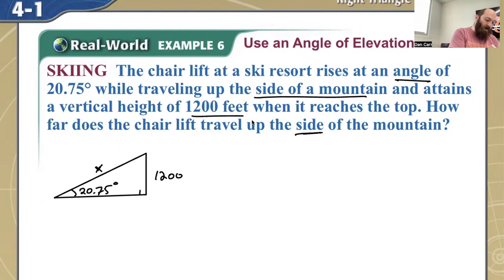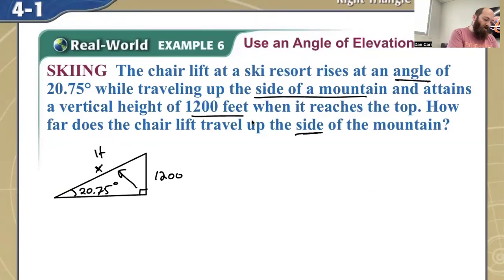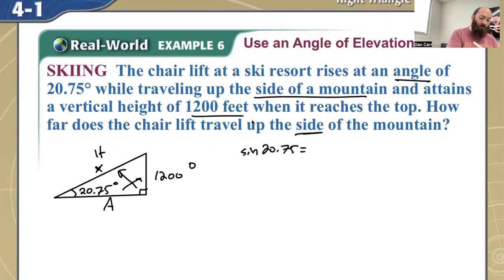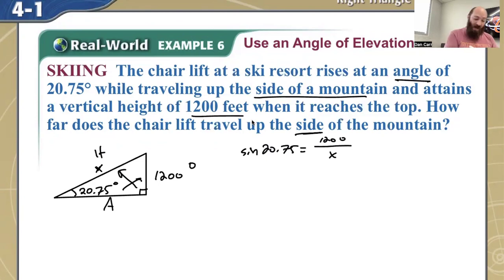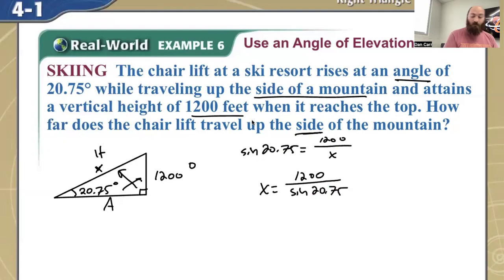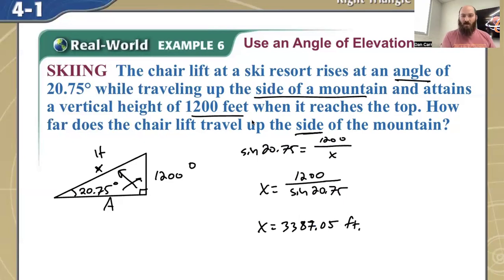Because it's the height of the mountain we can assume it's a right triangle, and we're going to set it up with our normal trig steps. This is going to be my hypotenuse, this is my opposite, and this is adjacent. The trig that uses opposite and hypotenuse is going to be sine. So the sine of 20.75 is equal to opposite 1200 divided by X for my hypotenuse. I multiply both sides by X and divide out. I end up getting 1200 divided by the sine of 20.75. I plug that in my calculator and I'm going to get 3387.05 feet. It didn't say what to round to, so I'll go two decimal places.